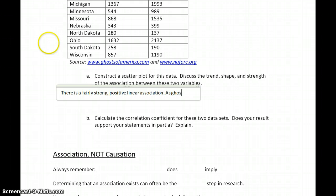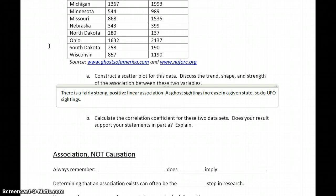So as ghost sightings increase in a given state, so do UFO sightings. So those two variables are increasing together.